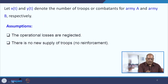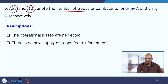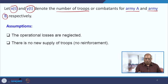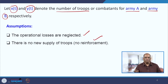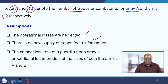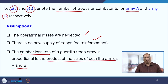We take X(t) and Y(t) to be the number of troops — X(t) for army A and Y(t) for army B. The assumptions are: operational losses are neglected, there is no new reinforcement, and initially whatever troops are present will remain present. The final assumption is that the combat loss rate of the Guerrilla troop army is proportional to the product of the sizes of both armies A and B.